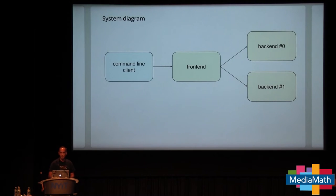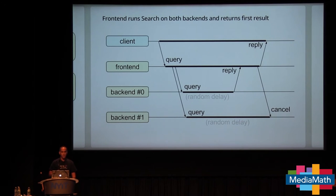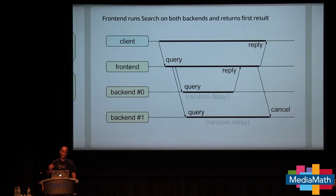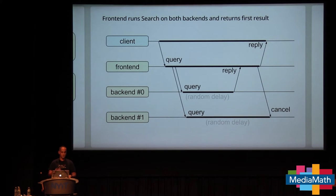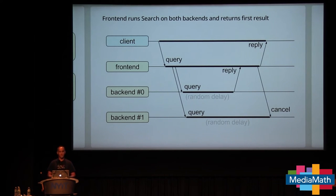Our example system has three kinds of components: a command-line client, a frontend, and two backends. The frontend acts as both a server for the command-line client and a client to the backends. When the client makes a request, the frontend sends it simultaneously to both backends and delivers the first reply. Some may recognize this — it's the example Rob Pike used in Go Concurrency Patterns. This is an actual distributed implementation that adds cancellation. The two backends sleep for random delays and return a reply indicating which one replied.